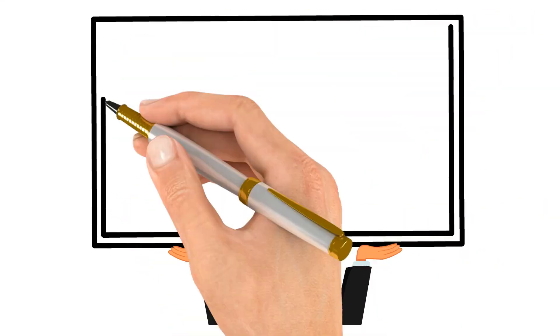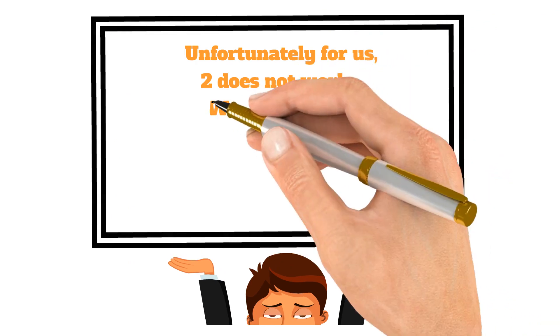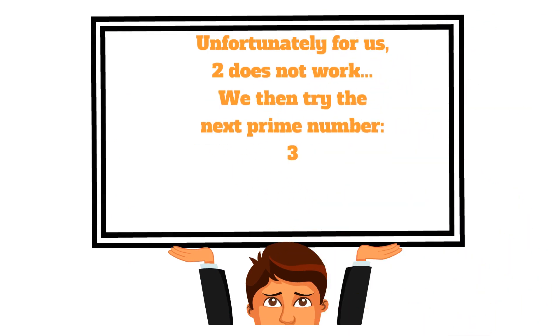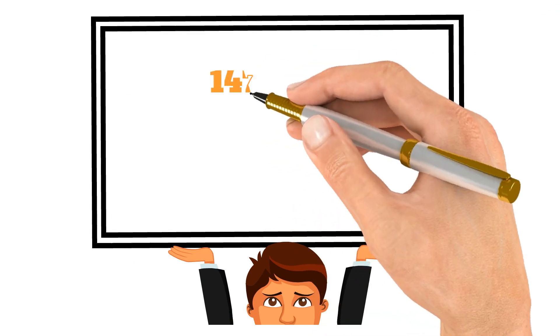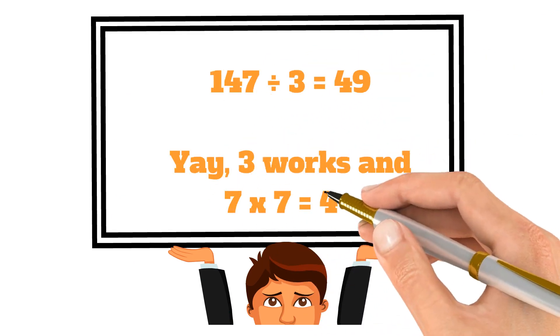Time's up! Unfortunately for us, 2 does not work this time. So we just move on to the next prime number, which happens to be 3. 147 divided by 3 equals 49. Yay, 3 works.